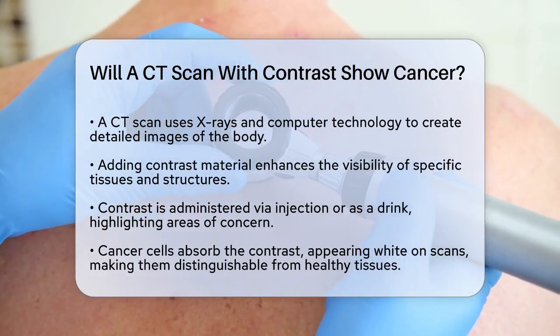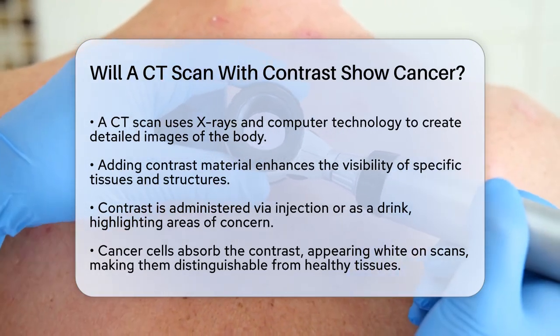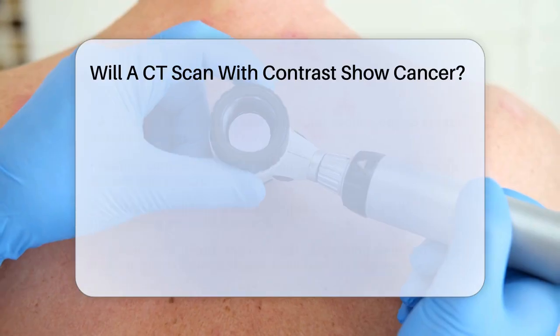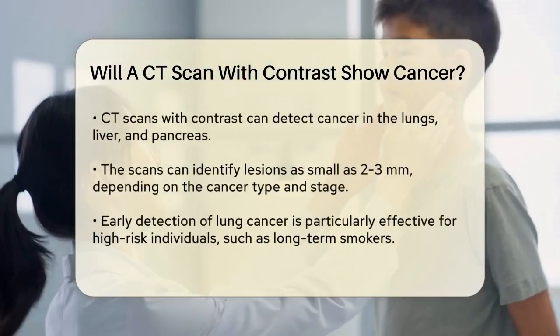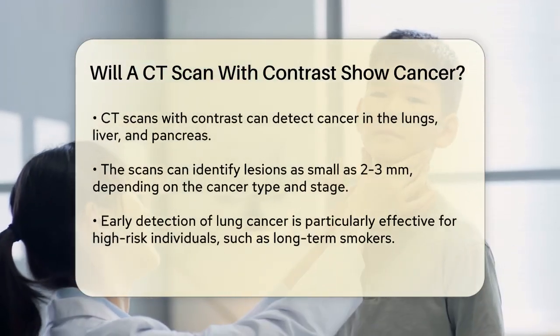For example, cancer cells tend to take up the contrast, which makes them appear white on the scan, distinguishing them from healthy tissues.